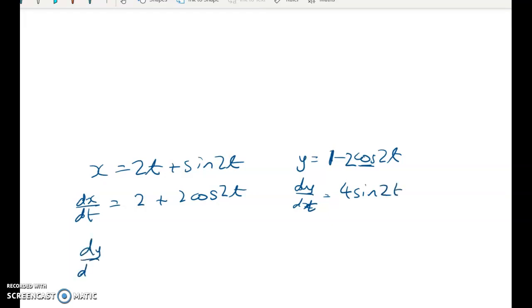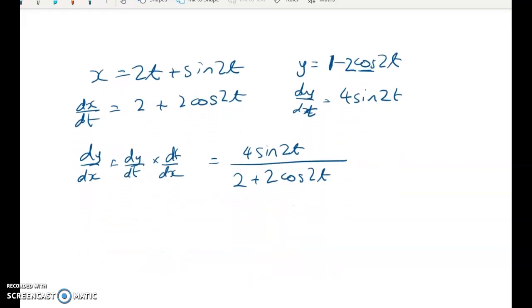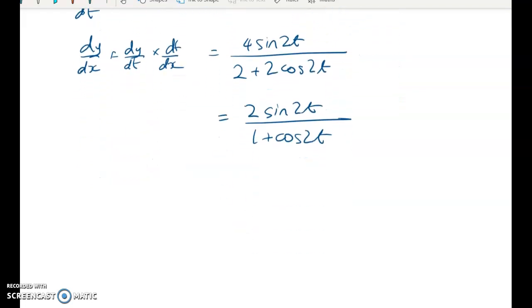And that means that dy by dx, which is equal to dy by dt times dt by dx is going to give me 4 sin of 2t over 2 plus 2 cos of 2t. And we had to prove that this was equal to 2 tan t, and you can see double angles screaming at you hopefully in there. So first getting rid of the 2, we've got 2 sine 2t over 1 plus cosine of 2t.